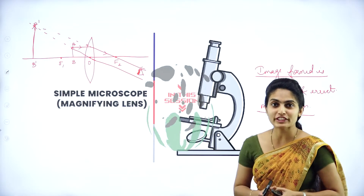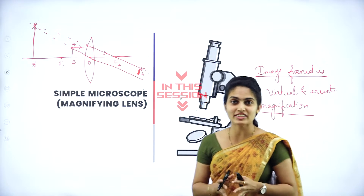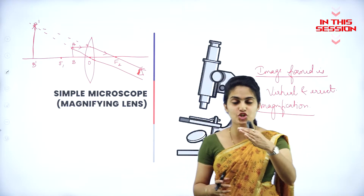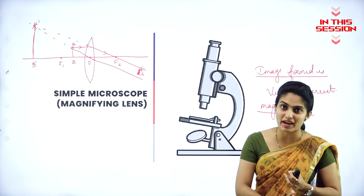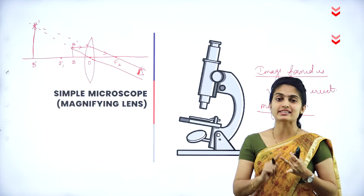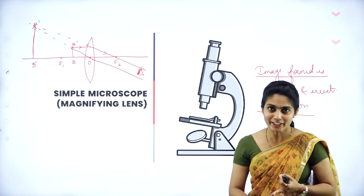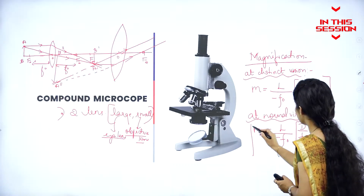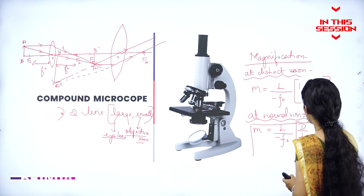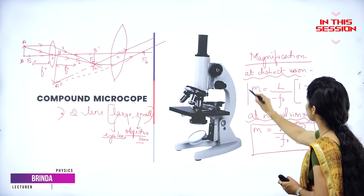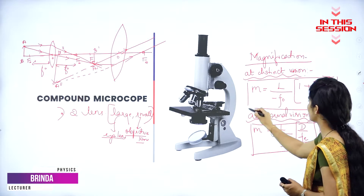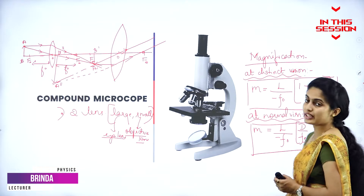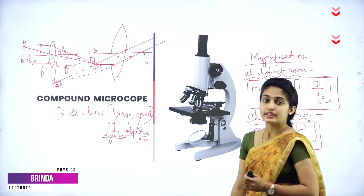The magnification is given as the ratio of angle subtended by the image to the angle subtended by the object. This is the equation for normal vision and this is the equation for distinct vision. The negative sign is because the image is said to be inverted.